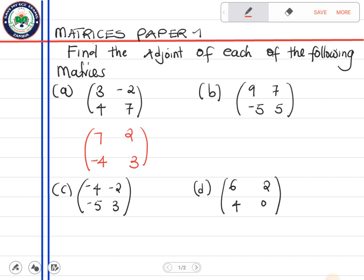Then for this one, we swap there, 5, then 9. We change the sign, goes to negative 7.